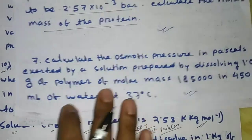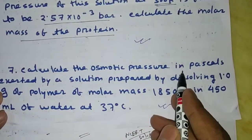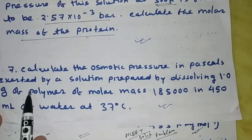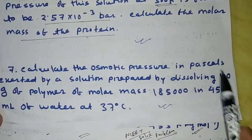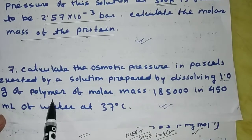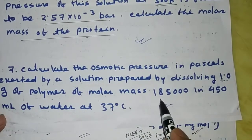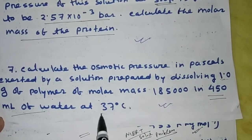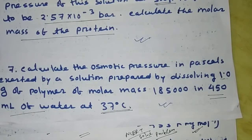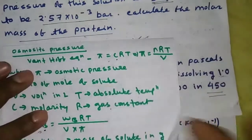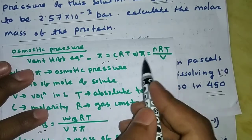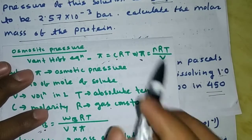Next problem: Calculate the osmotic pressure in Pascal exerted by a solution prepared by dissolving 1.0 gram of a polymer of molar mass 18,500 in 400 mL of water at 37 degrees centigrade. The formula to use is Pi = CRT, or Pi = (N/V)RT.